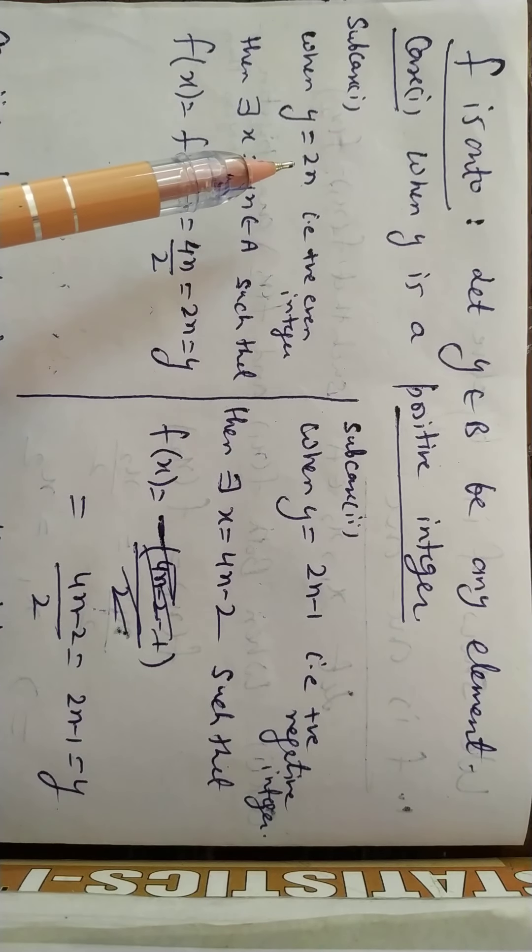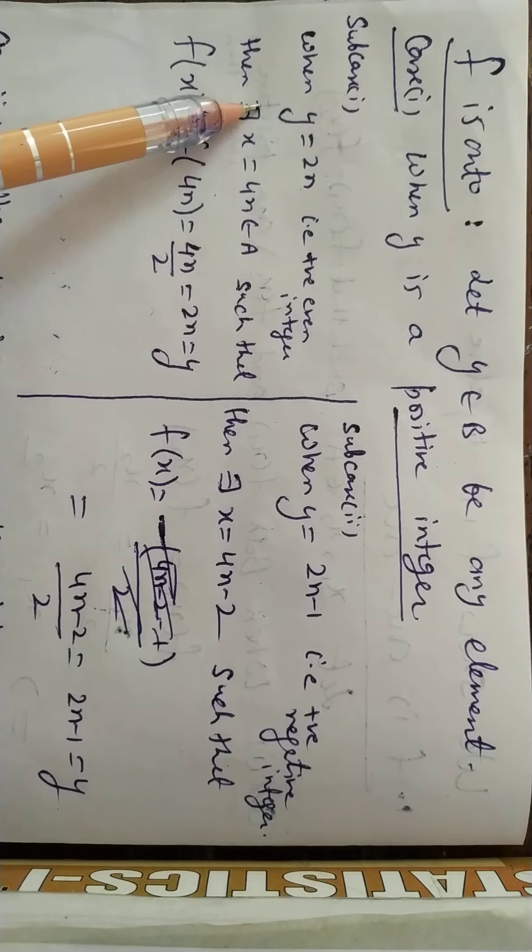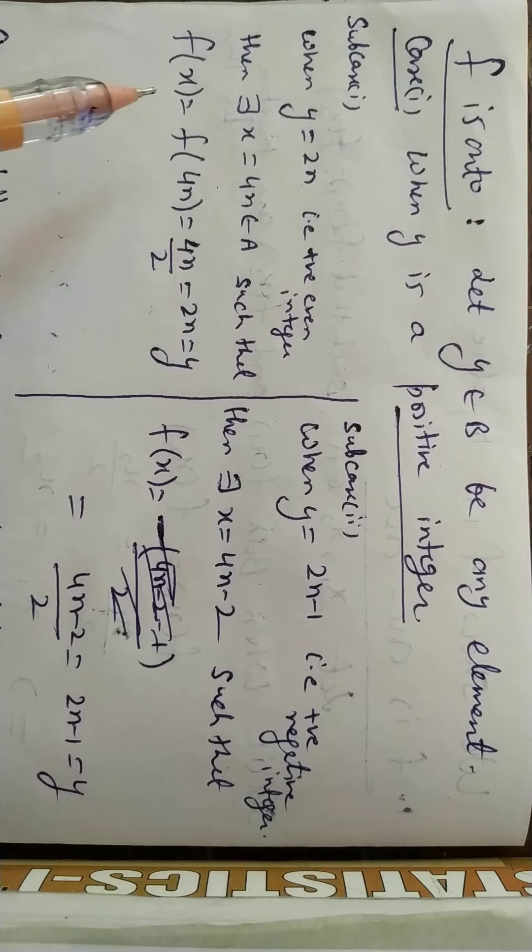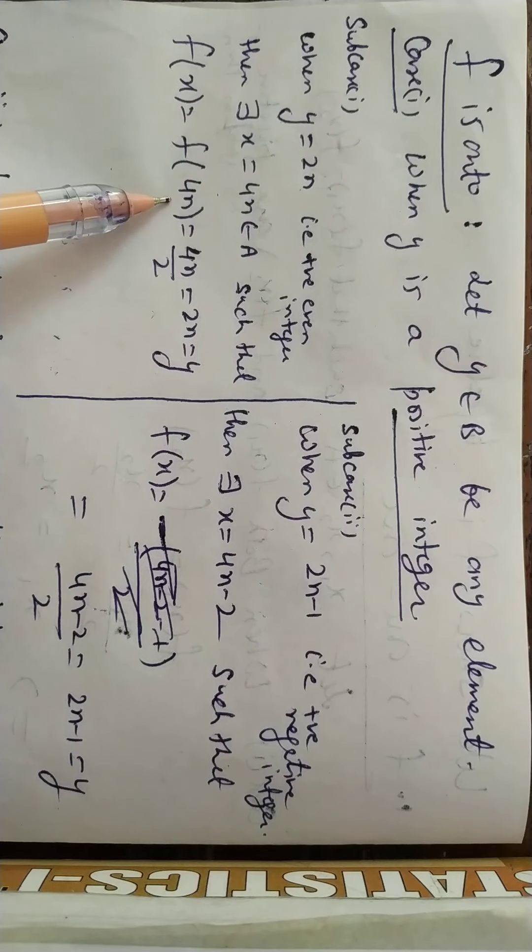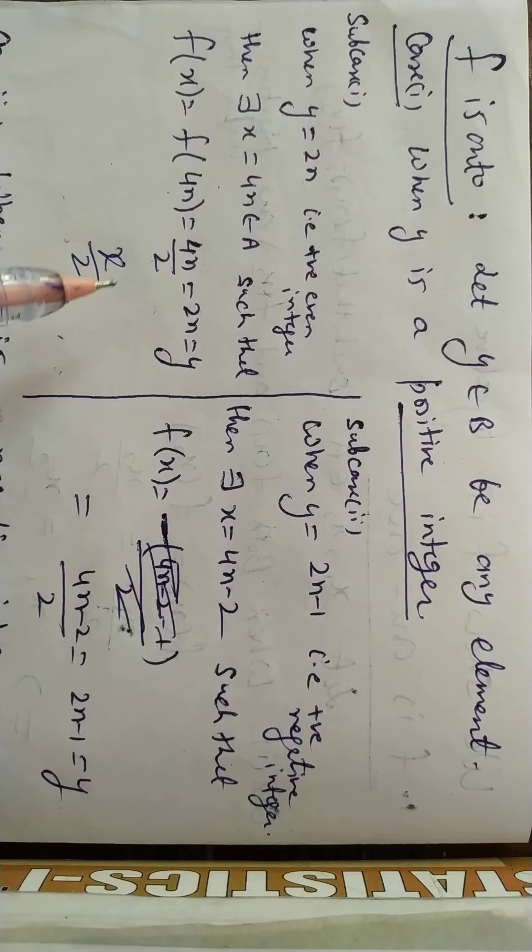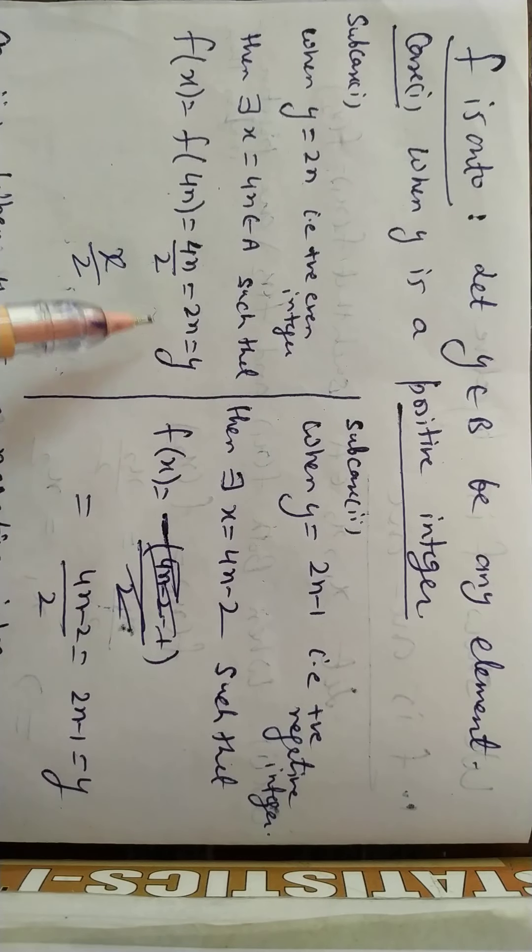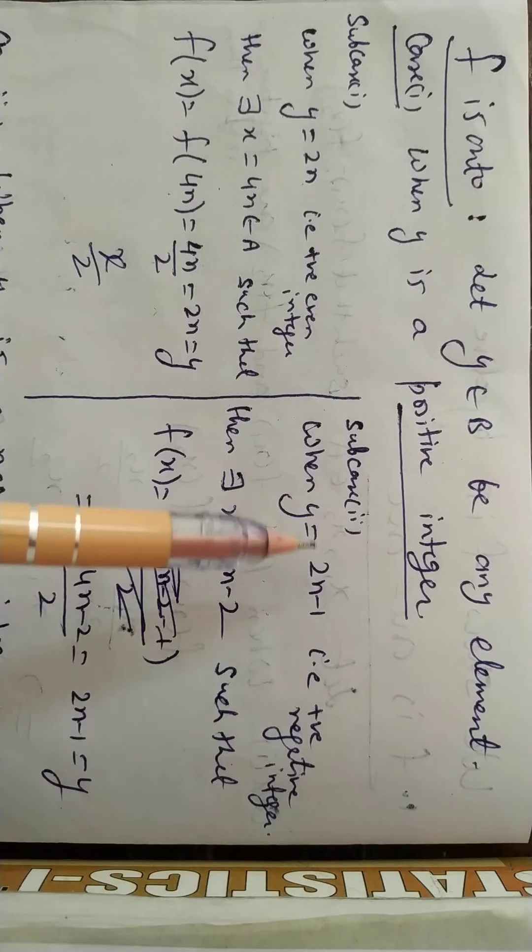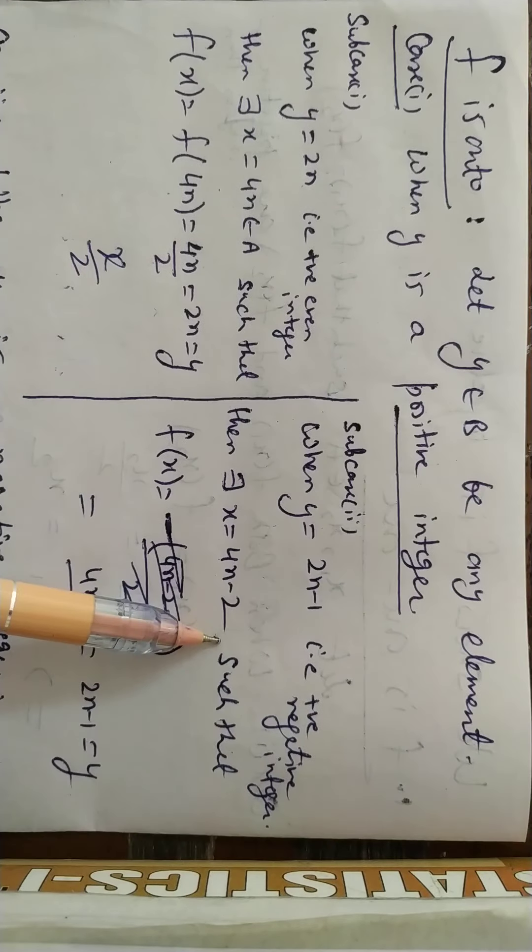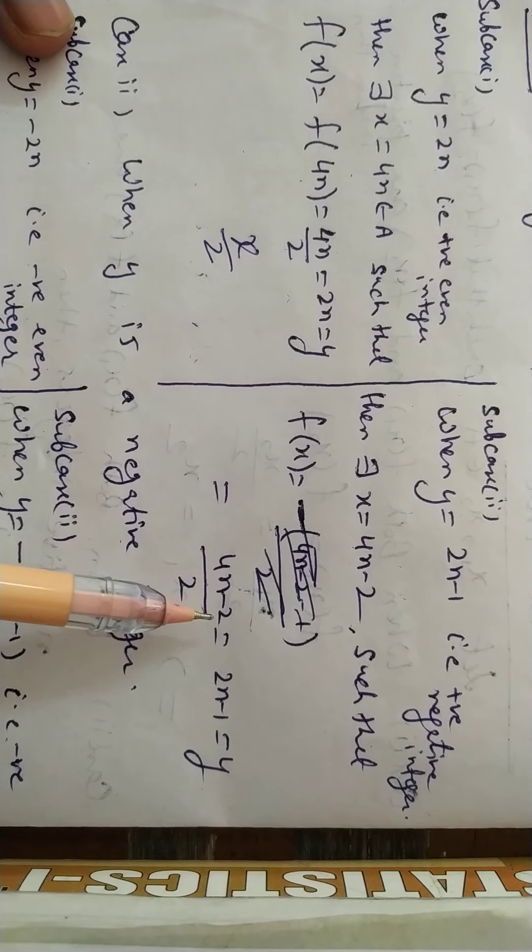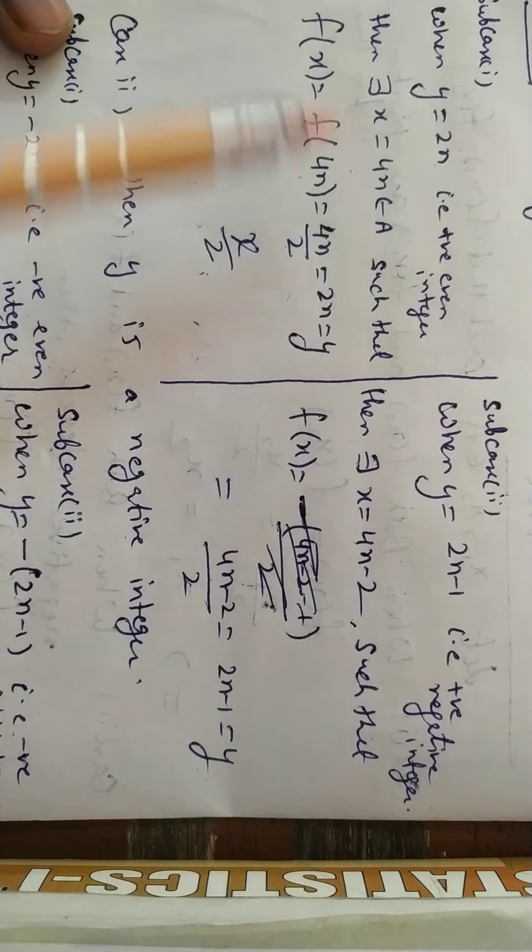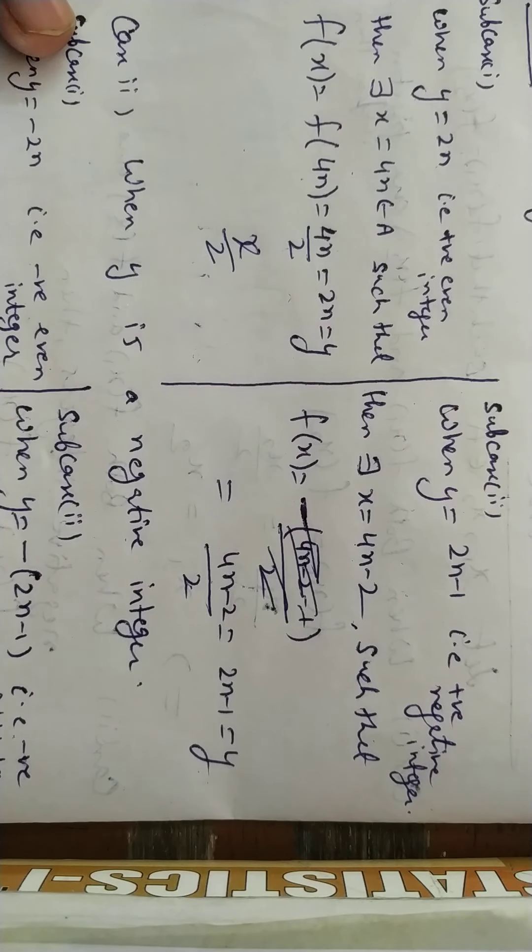If you take 2n-1 odd, then double it to get 4n-2. So f(x) becomes f(4n-2) = (4n-2)/2. Dividing by 2 gives y. So in both cases, f(x) = y, meaning it's onto.